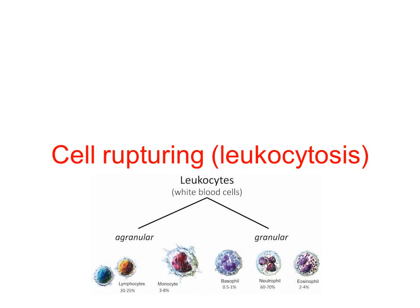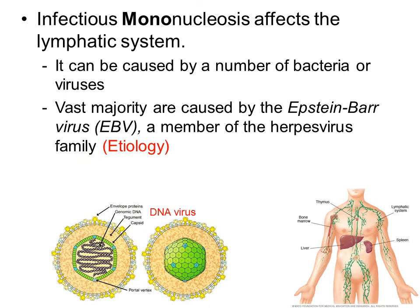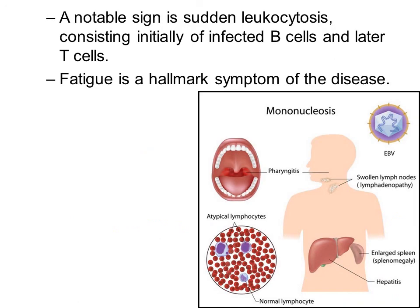We will now look at infections of white blood cells — leukocytes. Infectious mononucleosis affects the lymphatic system. It can be caused by a number of bacteria or viruses, but the vast majority of cases are caused by a virus called Epstein-Barr virus. The Epstein-Barr virus is a member of the herpes virus family, which is a DNA-based virus. A notable sign is sudden leukocytosis — the rupturing of white blood cells — consisting initially of infecting just B cells and then later T cells.